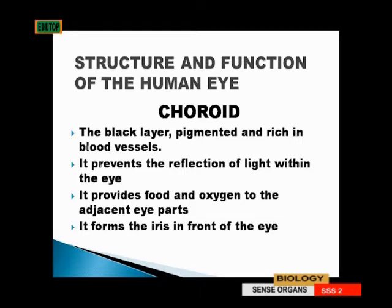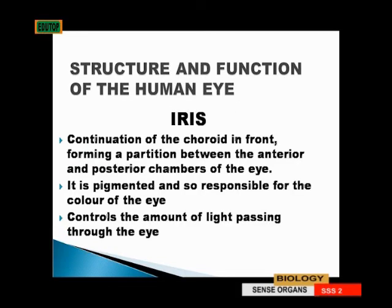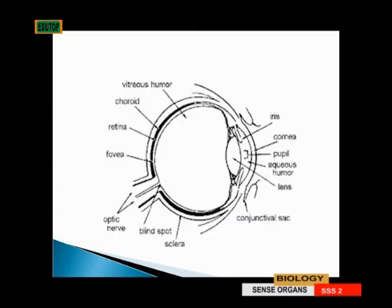The choroid also provides food and oxygen to adjacent eye parts. It forms the iris in front of the eye. The iris is the continuation of the choroid — there is the black part — forming a partition between the anterior and posterior chambers of the eye.